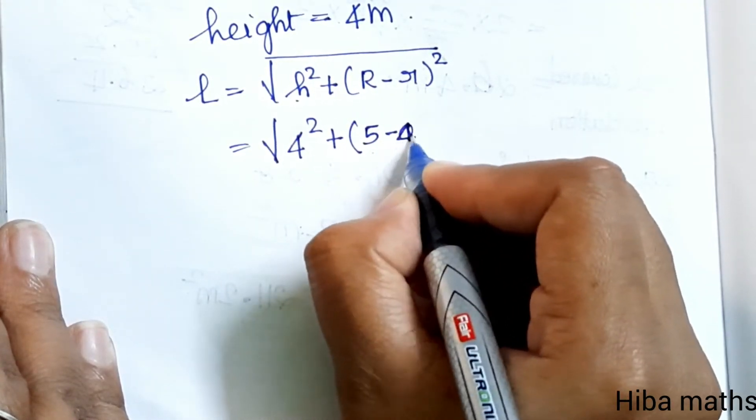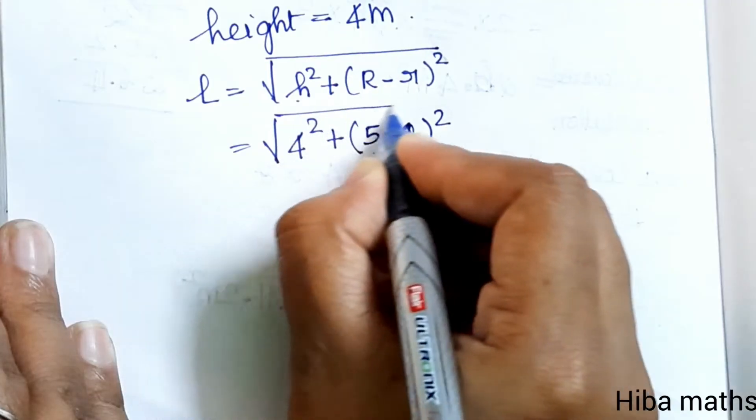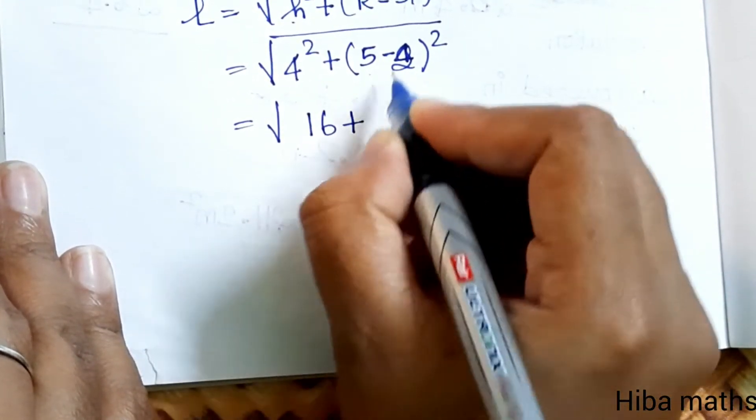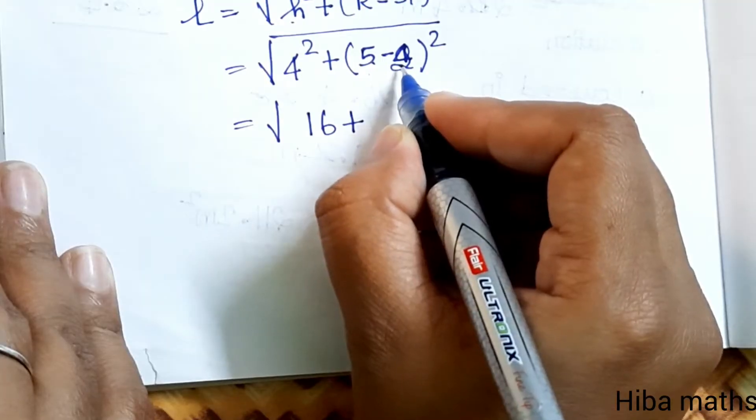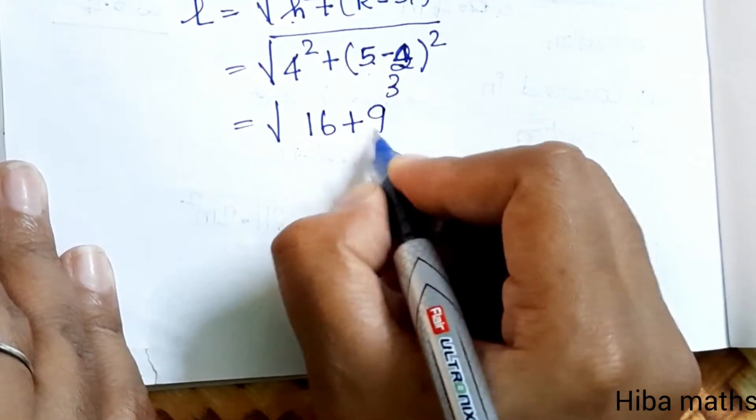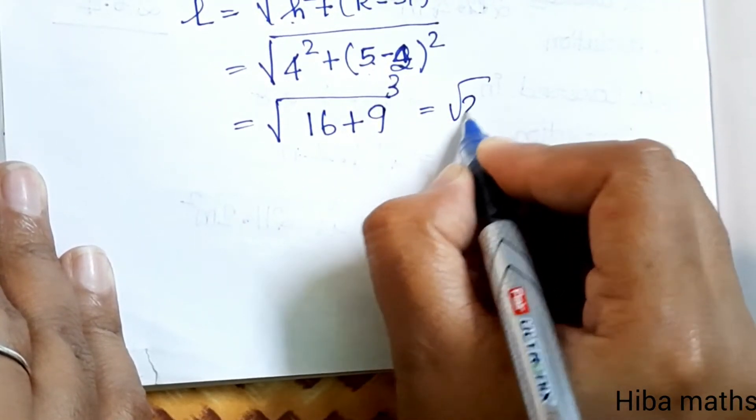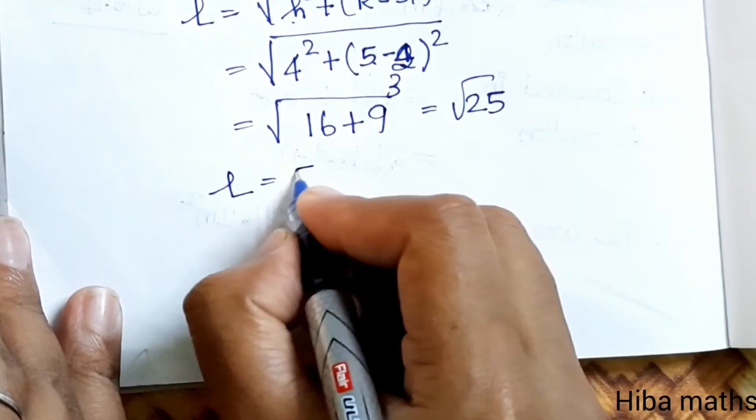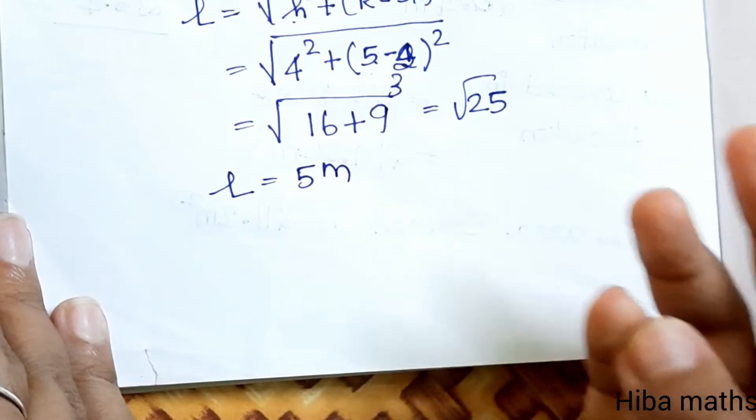Substituting values: L equals root of 4 square plus 5 minus 2 whole square, equals root of 16 plus 3 square which is 9, equals root of 25 equals 5 meter. So L equals 5 meter.